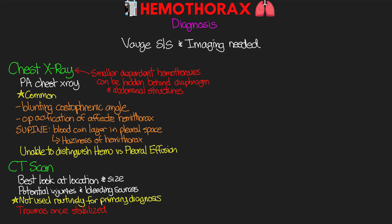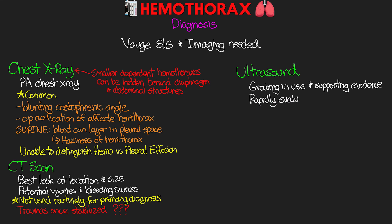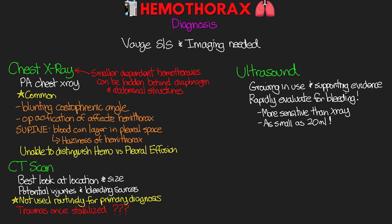In cases of unstable traumas or emergencies, it just might not be possible to transport the patient for a CT scan. That brings us to our next form of imaging — the ultrasound. The use of bedside ultrasound is growing in support and evidence for rapidly evaluating the presence of bleeding. In fact, ultrasound is more sensitive than x-ray at detecting small hemothoraces — as small as 20 mLs of blood — whereas an x-ray generally needs about 150 or more. As a result, it is actually considered a superior diagnostic tool.